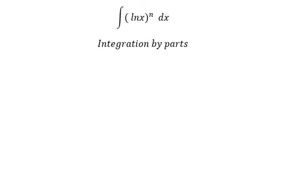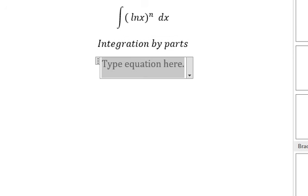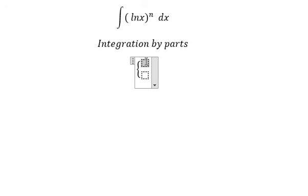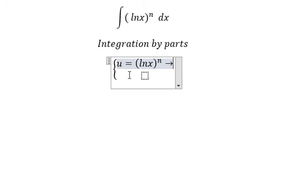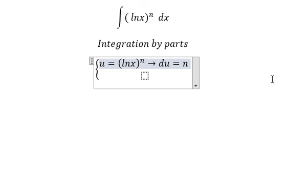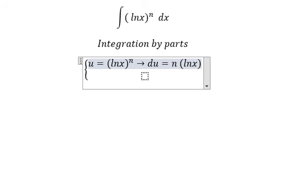So I will put u equals to ln x to the power of n. So if I do the first derivative for both sides, we have du equals to n ln x to the power of n minus 1 over x.